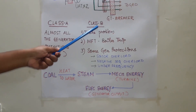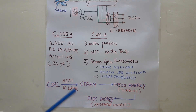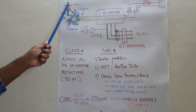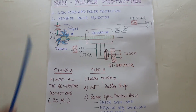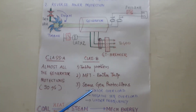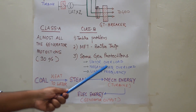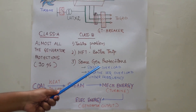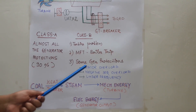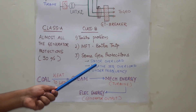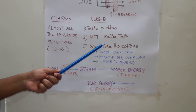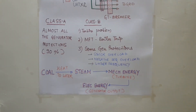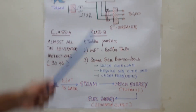Now let's come to class B tripping. Class B trip means first the turbine valve is closed, and after that the low forward power protection operates in the generator relay. The protections that use class B tripping are: stator overload protection, negative sequence overload protection, and under-frequency protection. These three are chosen because the stator of the generator is designed to withstand about 2 times rated current for around 1 minute, so we can tolerate 1 or 2 seconds delay in tripping. It is not necessary to trip the generator instantly on these three conditions.